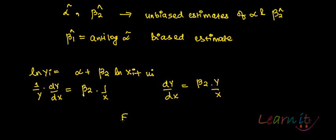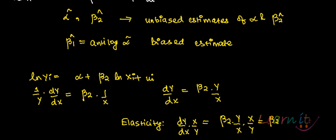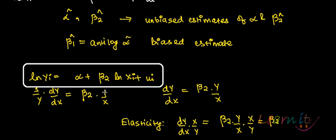Now writing out the elasticity: elasticity equals (dy/dx) times (x/y), which equals beta 2 times (y/x) times (x/y), which simplifies to just beta 2. So beta 2 in this model is actually the elasticity between y and x.